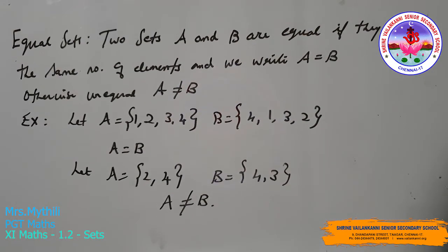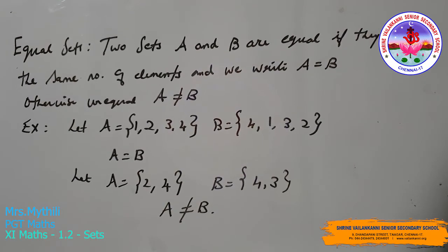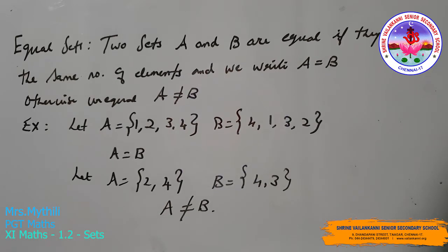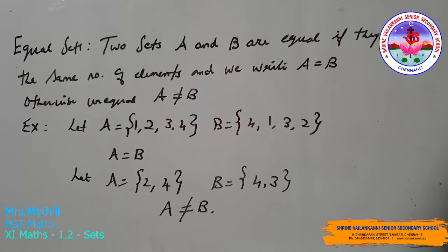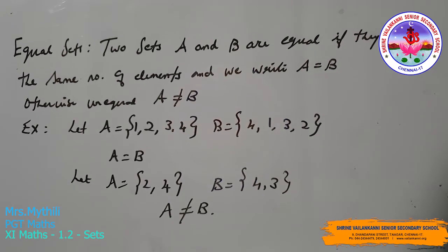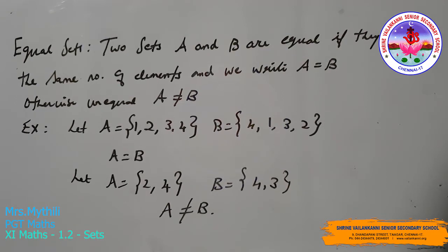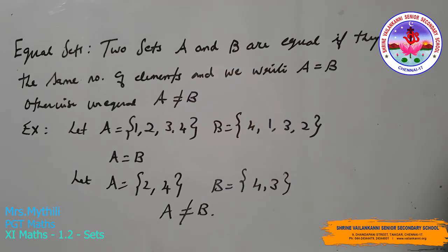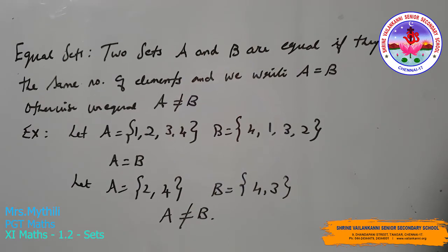Equal sets: two sets A and B are equal if they have the same elements, and we write A = B; otherwise A ≠ B. For example, let A = {1, 2, 3, 4} and B = {4, 1, 3, 2}. The elements are arranged in different order but are the same, so A = B. Another example: A = {2, 4} and B = {4, 3}. Here 2 does not belong to B and 3 does not belong to A, so A ≠ B.